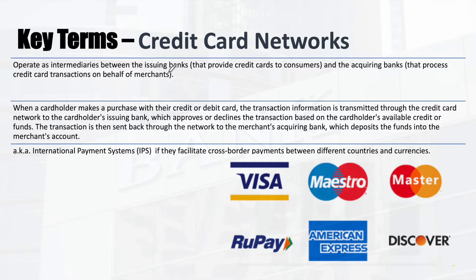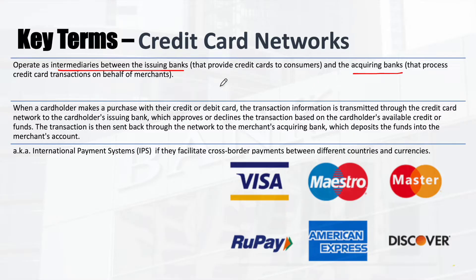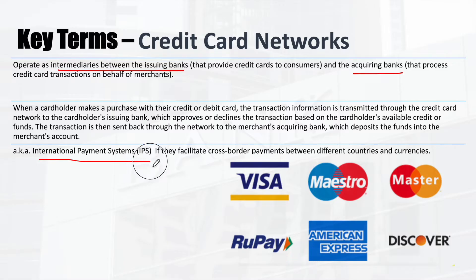Credit card networks include Visa, Mastercard, Rupay, Discover, and American Express. They are intermediaries between the issuing bank and the acquiring bank. We will see them in the flow to understand what they help facilitate. They are also called international payment systems — Rupay is a domestic one from India, but Visa, Mastercard, and American Express are international.